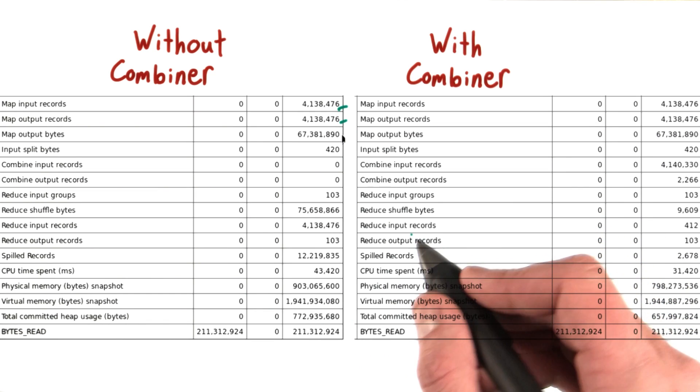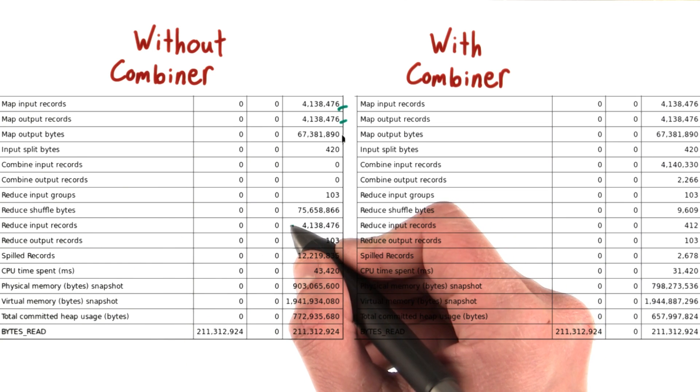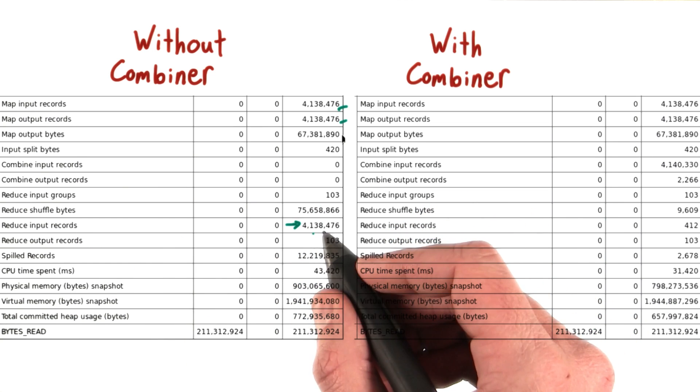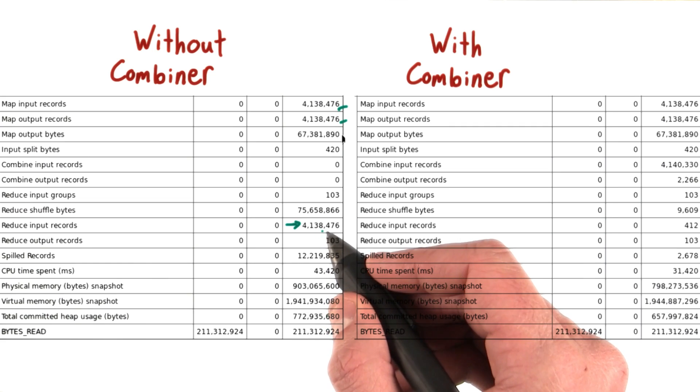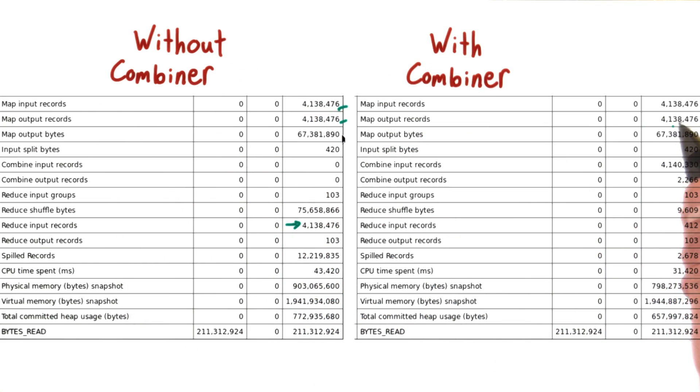But where things get really interesting is down here at reduce input records. So the reducers had to handle the whole 4 million records that the mappers outputted when there was no combiner. But when there was a combiner, these 4 million mapped output records are combined into 412 reduced input records, or reducer input records. That's pretty amazing. That's a huge change.